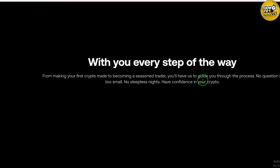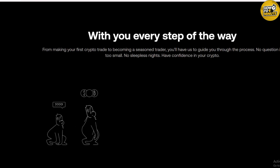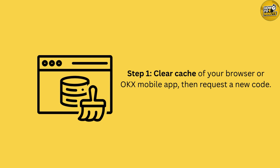Let's begin by clearing the cache on your browser or the OKX mobile app. Open your browser or app settings, look for storage or cache settings, and tap clear cache. Once done, go back to the OKX login or verification screen and request a new verification code.